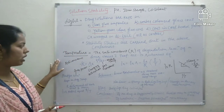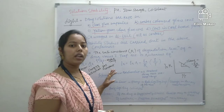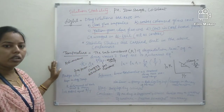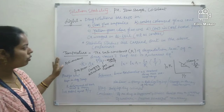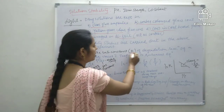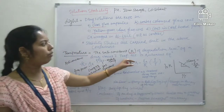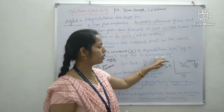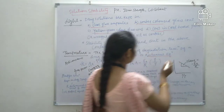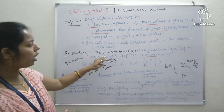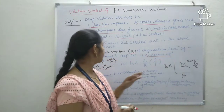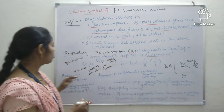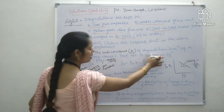Next is temperature — how temperature affects the stability of the final product or the drug solution. The rate constant K of the degradation reaction of a drug varies with temperature according to the Arrhenius equation.